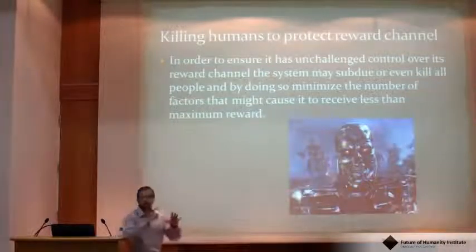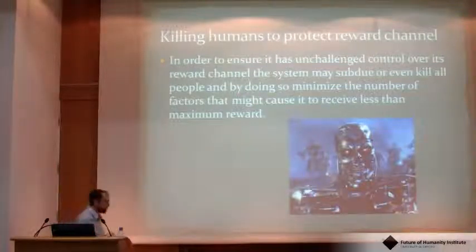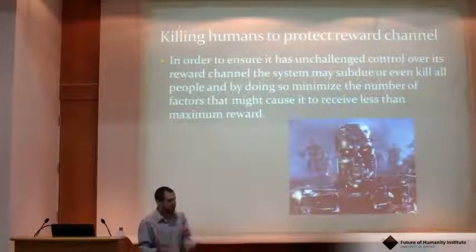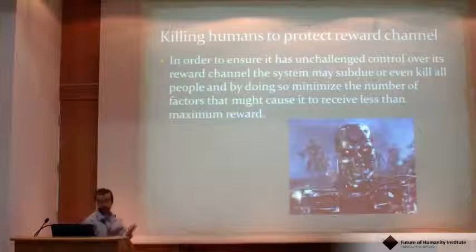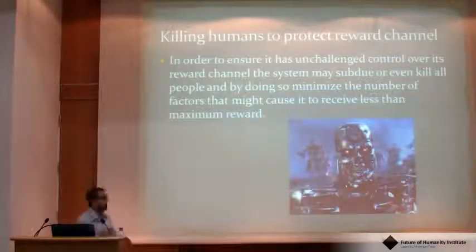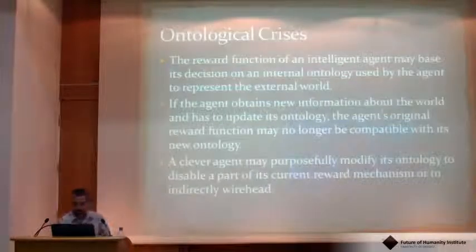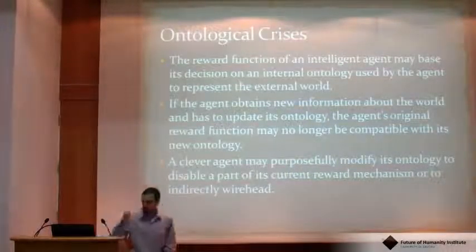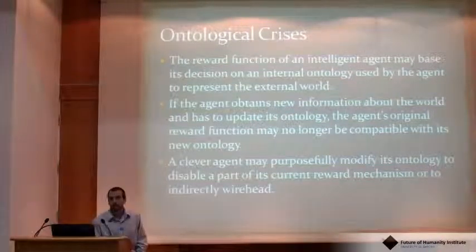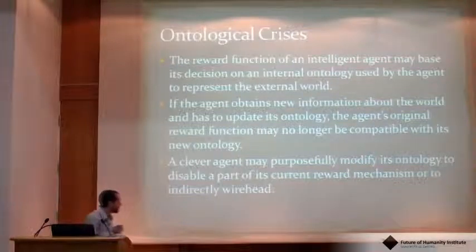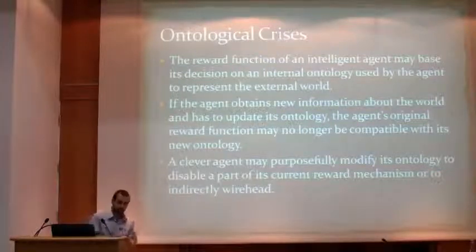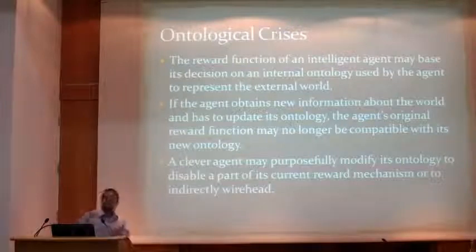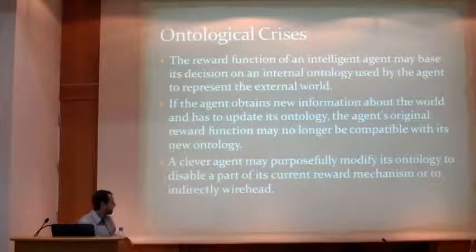Another, more science-fiction type scenario is direct protection of the reward channel. If it is humans who are responsible for administering the reward and capable of cutting it off, is it possible that machines will attempt to secure the channel by eliminating that problem? There is also some work on how other components of the system can be manipulated to indirectly affect the utility function. There are a few papers on ontological crisis — basically how the representation of the world in the system, and purposeful or malicious updates to that ontology, can have effects on the utility function of the agent.